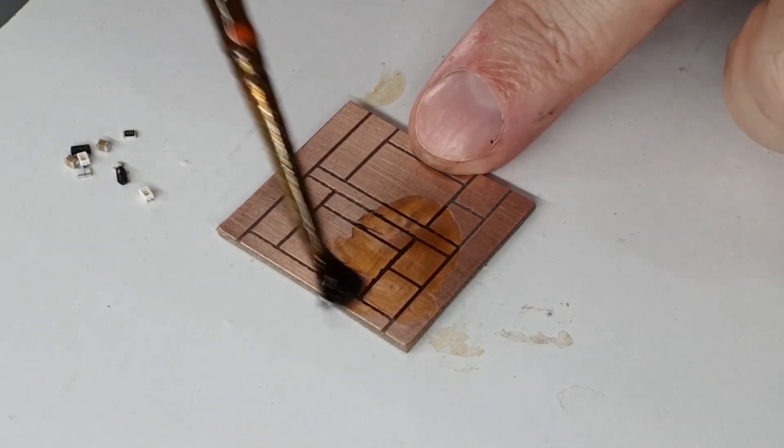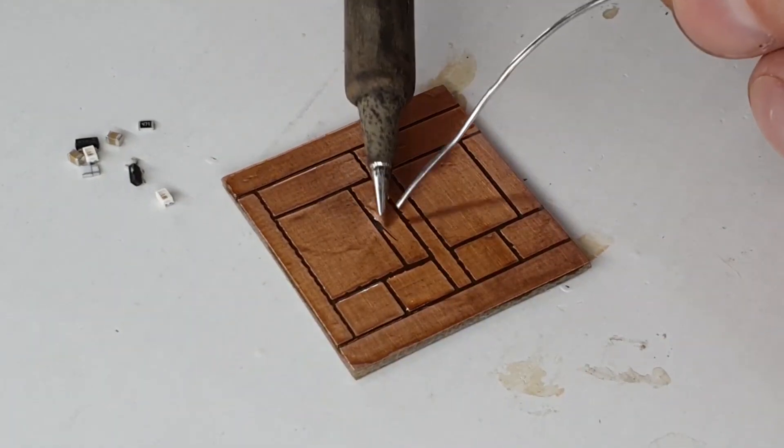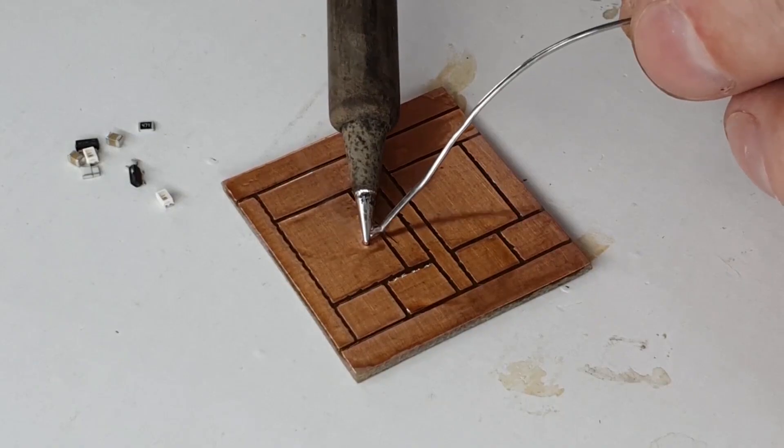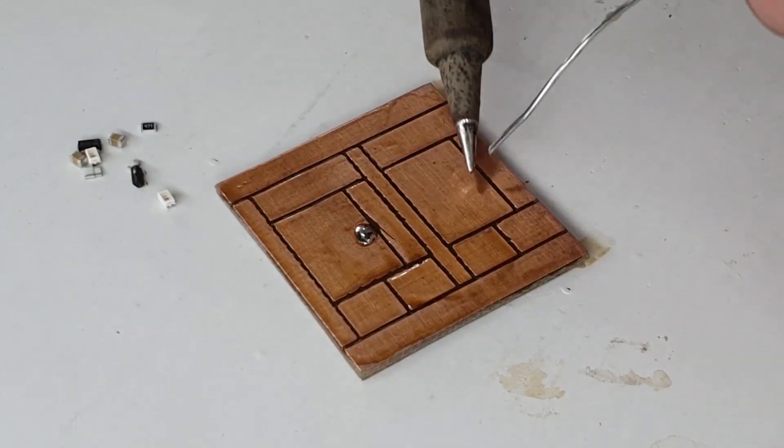Flux the board thoroughly. Don't be shy. Place a small blob of solder on one side where each part sits on the board.